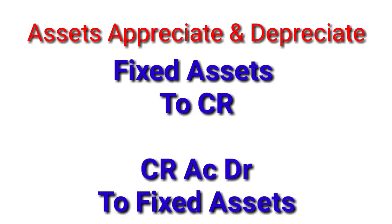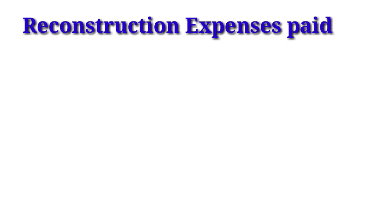In every question you will get the adjustment of assets value appreciating or depreciating — this is a very easy entry. When assets value increases, it is a profit, so Capital Reduction is credited. If assets appreciate, the entry is: Fixed Assets Account debit to Capital Reduction (CR). If the value depreciates, it is a loss, so the entry is: Capital Reduction debit to Fixed Assets. Rule: if loss, Capital Reduction is always debit; if profit, Capital Reduction is always credit.